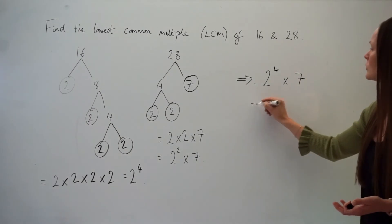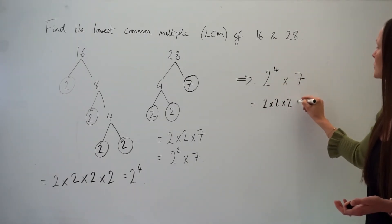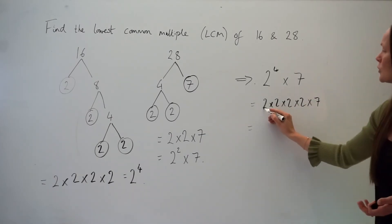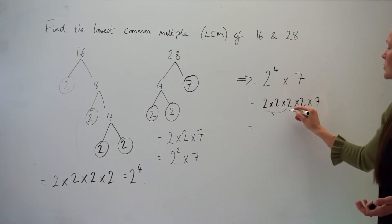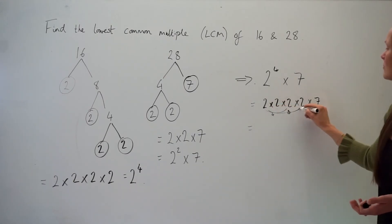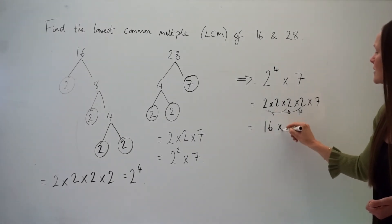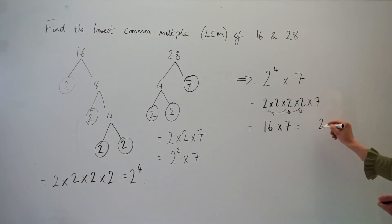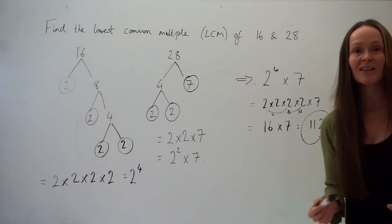Two to the power of 4 is the same as 2 × 2 × 2 × 2. Two times 2 is 4, times 2 is 8, times 2 is 16. Then calculate 16 multiplied by 7, which gives us 112. So the lowest common multiple of 16 and 28 is 112.